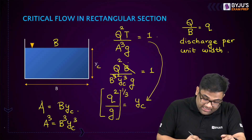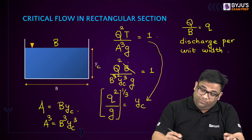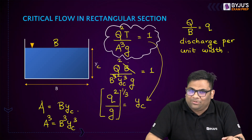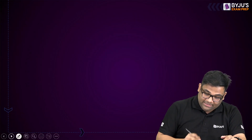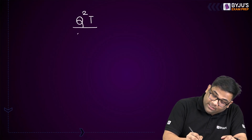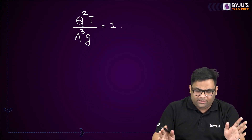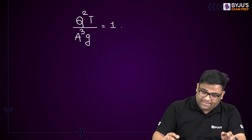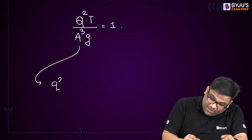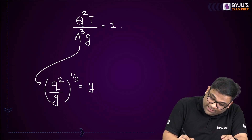From this equation I am able to derive the expression for Yc. Sometimes in the examination people forget the formula for critical depth of a rectangular channel — if you know this governing equation, you can easily derive it within half a minute. The governing equation for all cross-sections is Q squared T by A cubed G equals 1, and applied to rectangular channels this becomes Yc equals (q squared by G) to the 1/3.